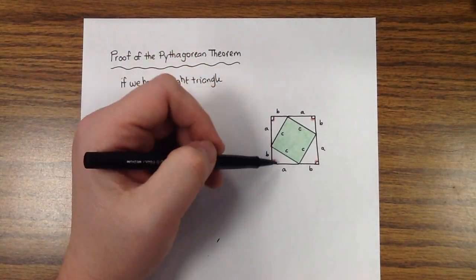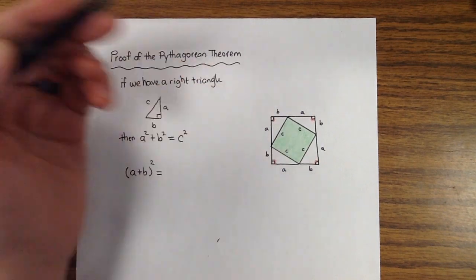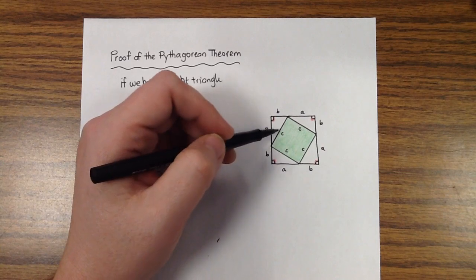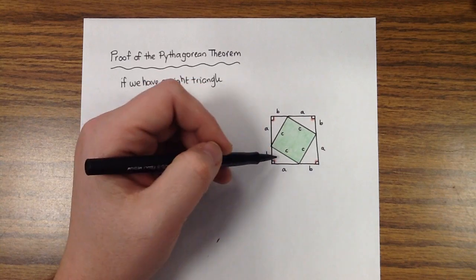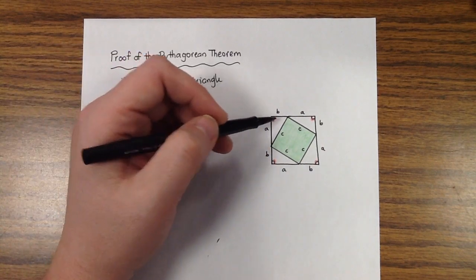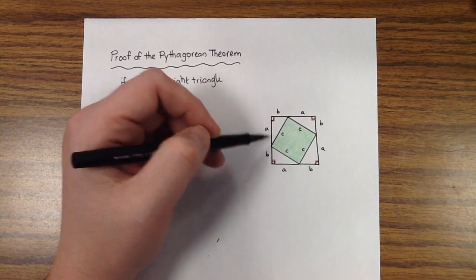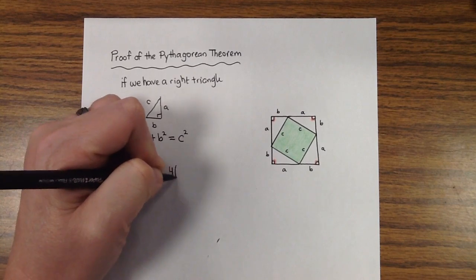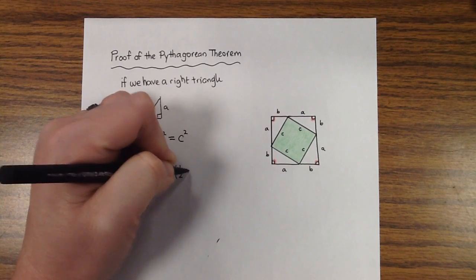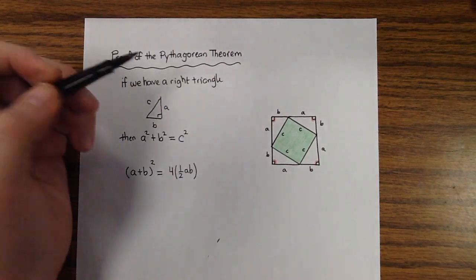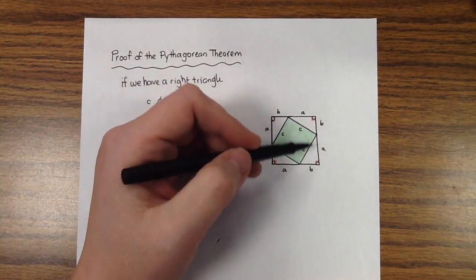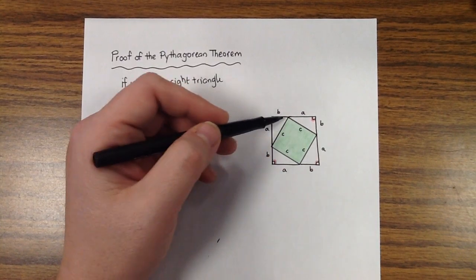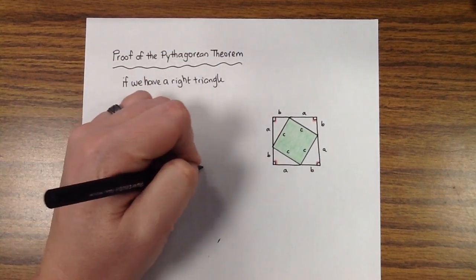Now, let's write the area of the entire square a little bit differently. So how many of these right triangles do we have? Well, we have four of them. And the area of a triangle is half the base times the height. And so part of the area would be four times one-half AB. So that would represent the area of all four of these right triangles. And then we have to add in the area of the square in the center. And so that's C times C, which is C squared.